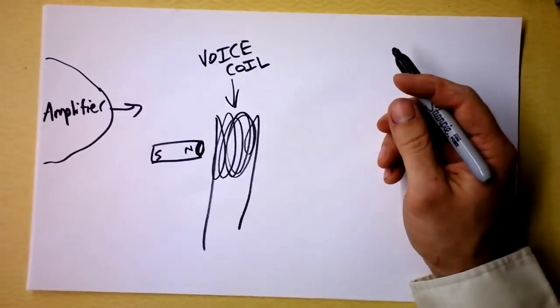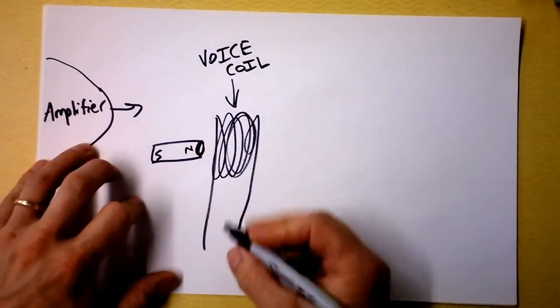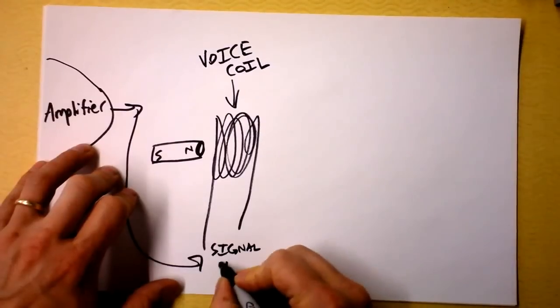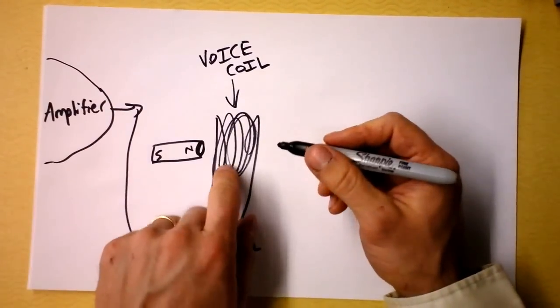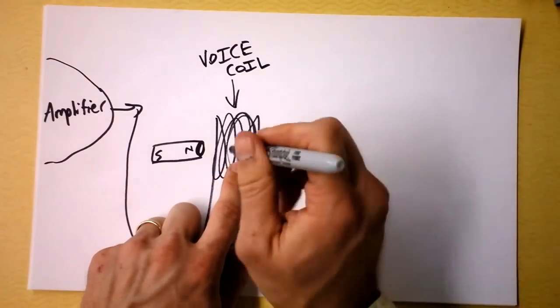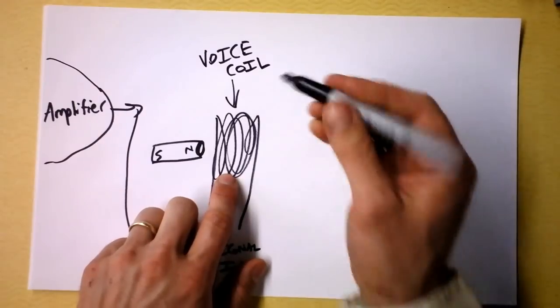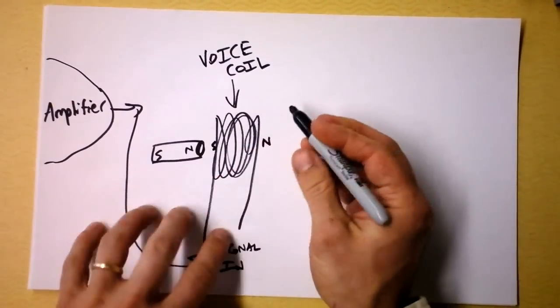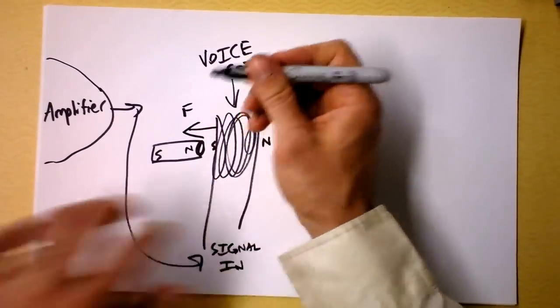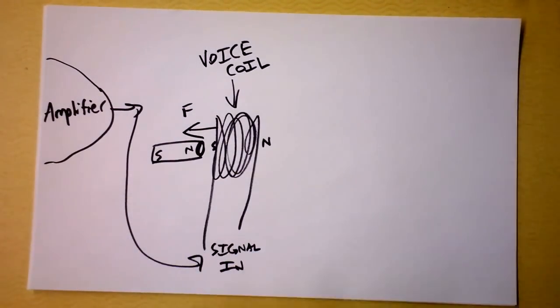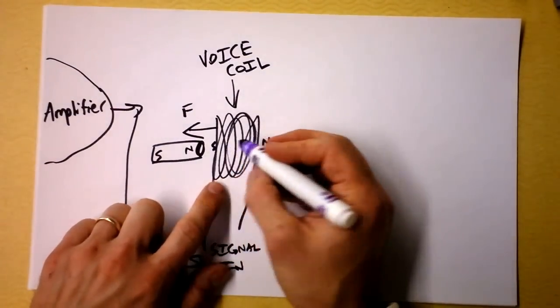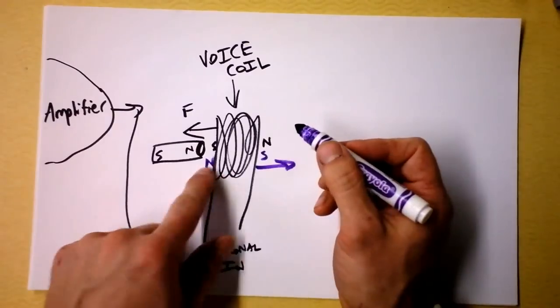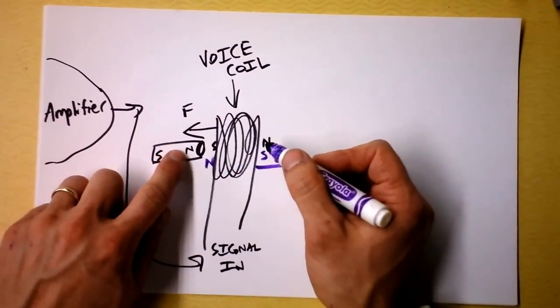And the plan is that when you send a big voltage through here, signal comes in here. And when you send a big voltage through it, you'll get a big current. And the big current will cause the voice coil to become a magnet. And the voice coil will either be facing the right direction, like this would be north and that would be south, in which case there would be a force that way. And so the voice coil would be pulled in. Or the voice coil could get a current the other direction, in which case you'd have a south here and a north here. And then there'd be a force that direction on it because it's a magnet facing the wrong direction compared to that guy right there.